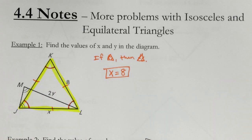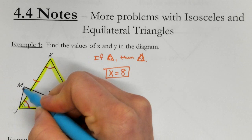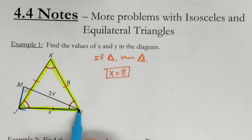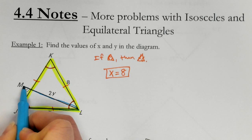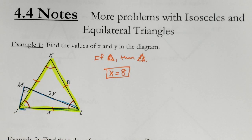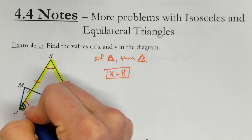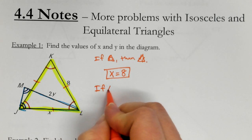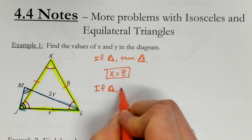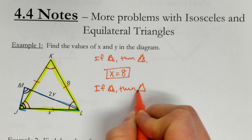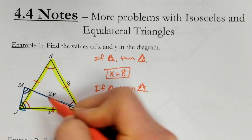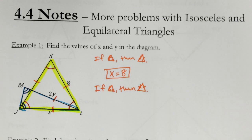Now, if I look at, let's get a different color here, MJL. So that triangle, and I see these tick marks. So that means if two angles are congruent, then two sides are congruent. Well, this one already has a tick mark, so I can put the tick mark there as well.